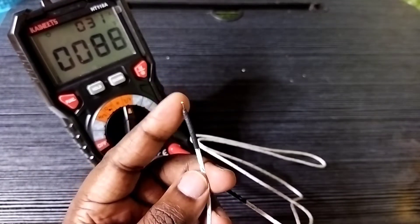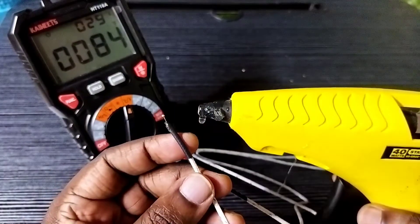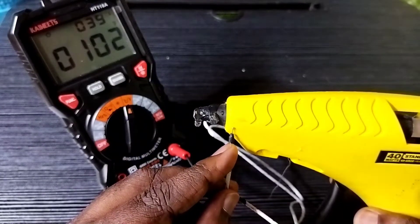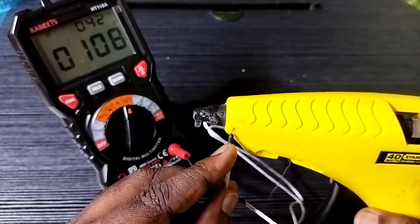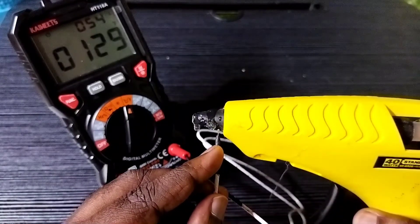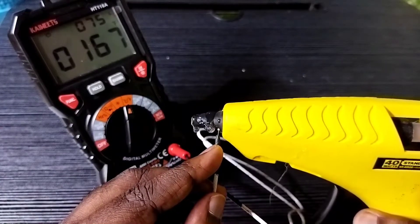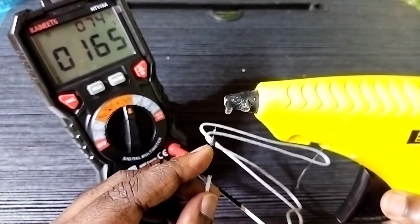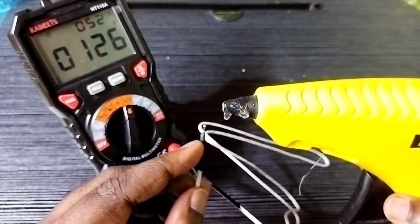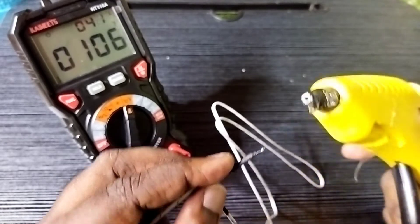Let me test the temperature. I am going to measure the temperature of this glue gun. In the LCD display you can see the reading in degree Celsius and degree Fahrenheit. It's showing 70 degrees Celsius and 165 degree Fahrenheit. It shows both in degree Celsius and degree Fahrenheit.